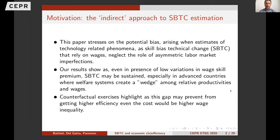What is the motivation of this paper? In this work we try to stress that there are risks of potential bias that arise when the measure of skill-based technical change, or other technology-related phenomena, relies on information on wages — because information on wages may contain asymmetric labor market imperfections, and this could drive a gap or wedge between the pattern of relative productivity with respect to relative wages.